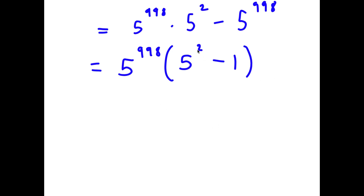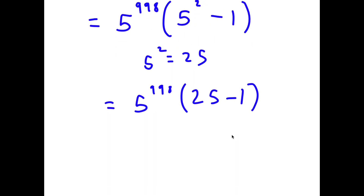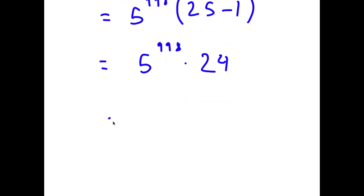So I have 5 to the power of 998 times 5 squared minus 1. Now 5 squared equals 25, so I have 5 to the power of 998 times 25 minus 1. Well, 25 minus 1 is simply 24, so I have 5 to the power of 998 times 24, or in a better format: 24 times 5 to the power of 998.